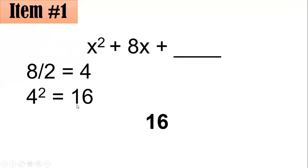Then you have 4 squared equals 16. Hence, the constant that should be added should be 16. And the correct answer, therefore, is letter A. I hope you got this correctly.